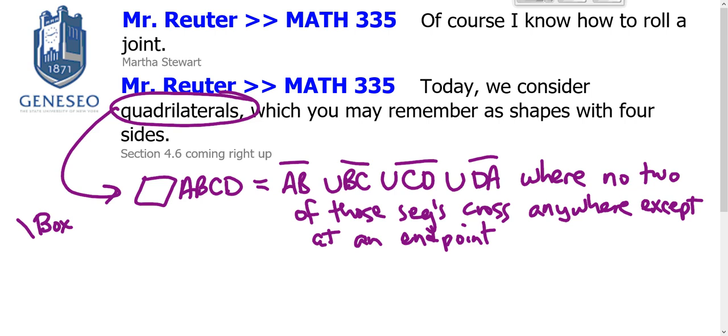I will note that the order matters, because if the points A, B, C, and D are these four points, then quadrilateral ABCD looks like this, quadrilateral ACBD looks like this. So it's not just that we have points in the plane, the order in which we connect them matters.